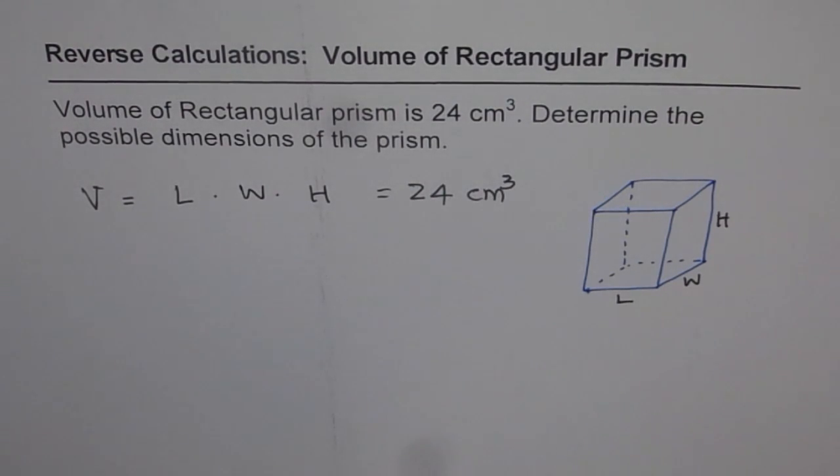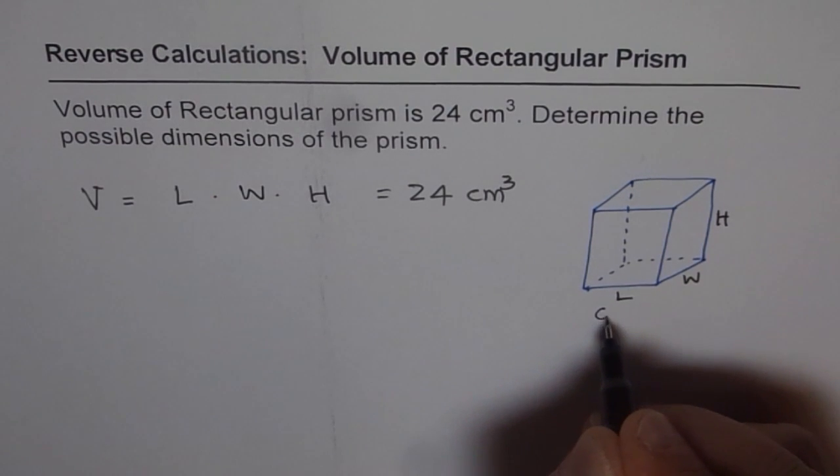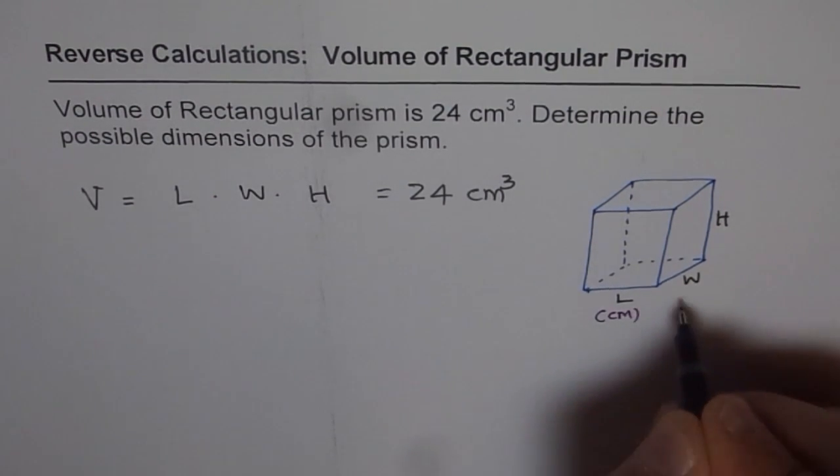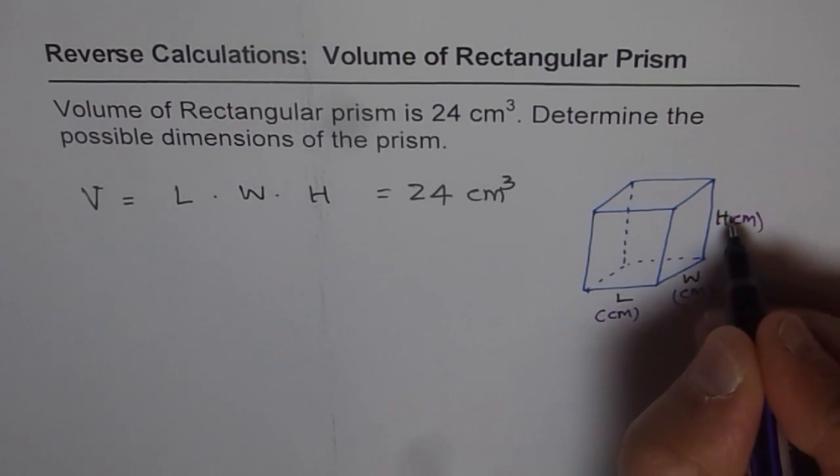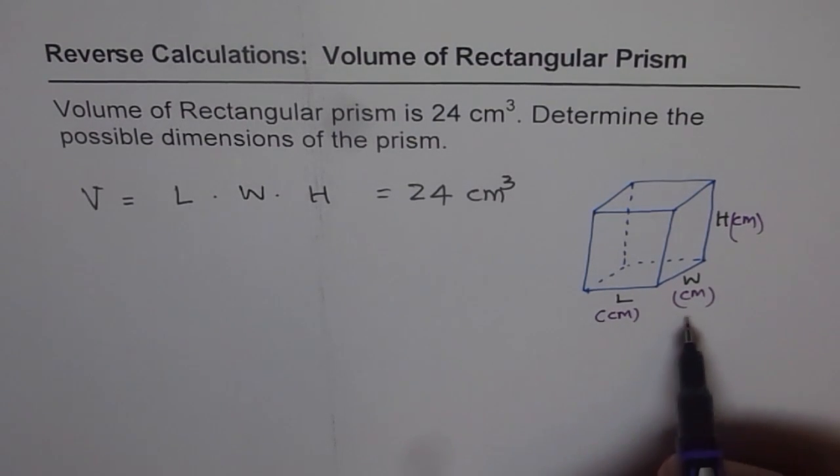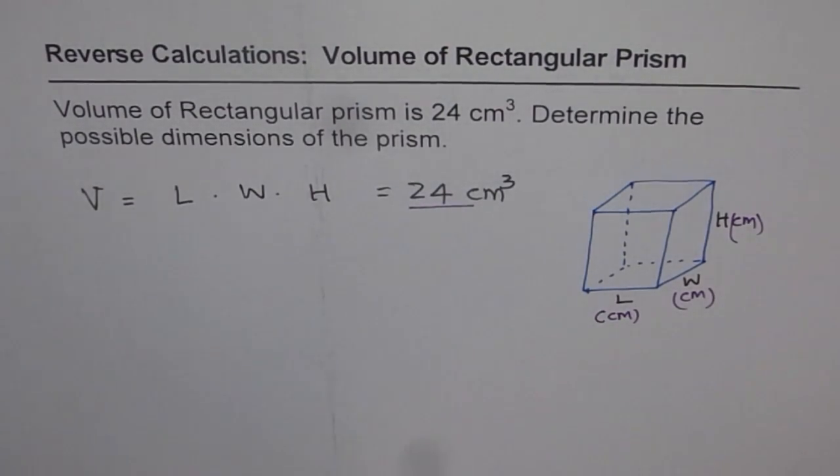And we need to find what length, width and height could be. That is very tricky. One thing is very obvious, that the units are in centimeters. So we can write all these are in centimeters. So we know that much at least. At times I have seen that we miss on that. Now we have to look into what combination of length, width and height could give us 24 when they are multiplied. That is what the real question is.